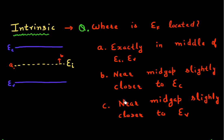The third option is that it's located near the middle of the band gap, but slightly closer to the valence band — meaning the distance between the Fermi level and the valence band is slightly less compared to the distance between the Fermi level and the conduction band.